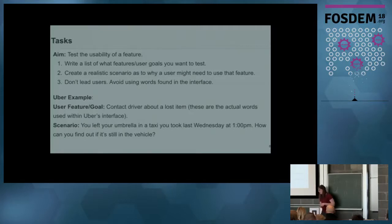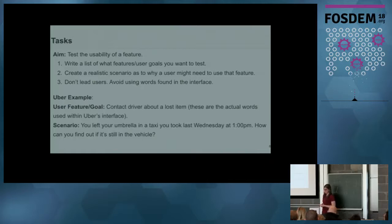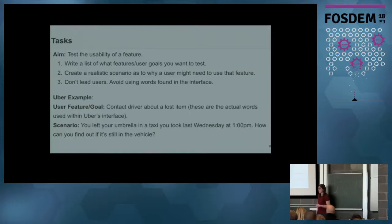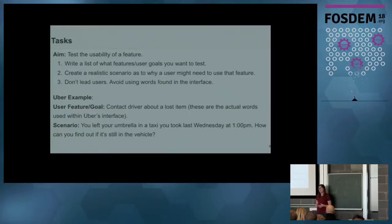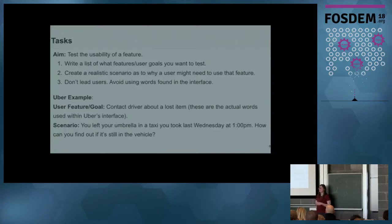Now for tasks — these are where we get users to actually do something. Think about the features or user goals you want to test. For example, imagine we work at Uber and we're testing the feature for contacting a driver about a lost item. If you've correctly screened your users, you might already know they've taken a taxi with Uber within the last week, so you can pull that into your scenario — it's relatable and users will understand it. Notice how we've avoided using words found in Uber's interface, because I want to understand how users would naturally look for that information and what words they would use.